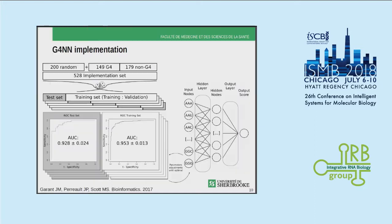We trained a machine learning artificial neural network on those sequences. We have about half G4-folding and half non-G4-folding sequences; within the G4-folding set, a third are non-canonical structures, and 10% of the non-G4 sequences actually fit the canonical G-quad definition. We trained the neural network using 5-fold cross-validation with extensive optimization, arriving at a model with very robust predictive power.